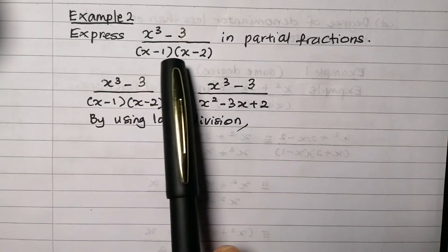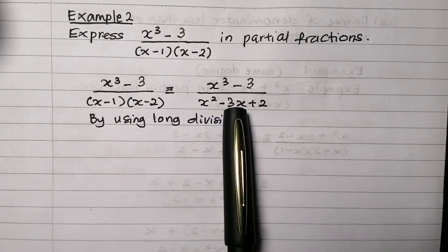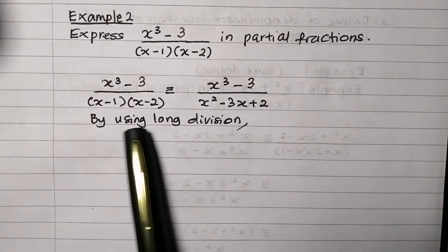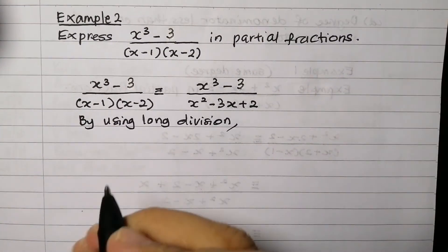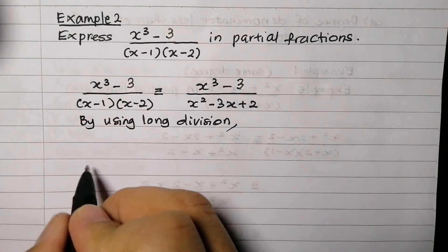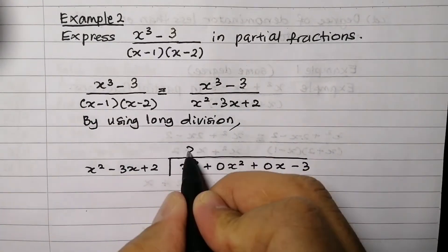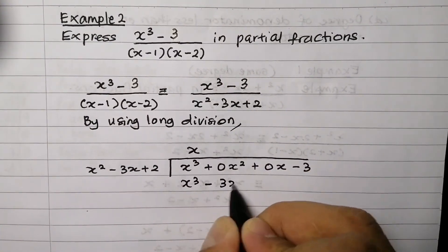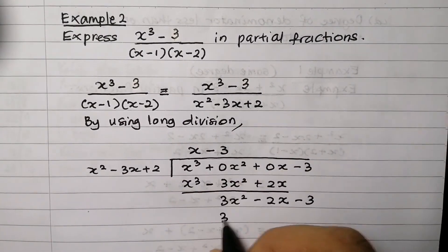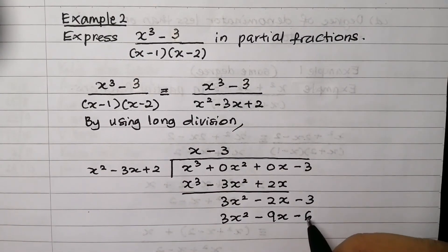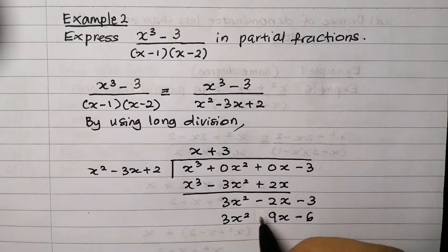Example 2: Express (x³ − 3) over (x − 1)(x − 2) in partial fractions. Here, the degree of the numerator is greater than the degree of the denominator, so we use long division.